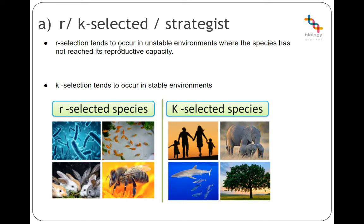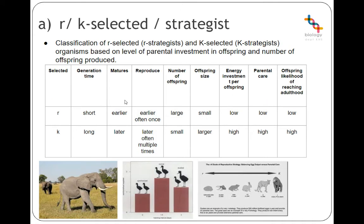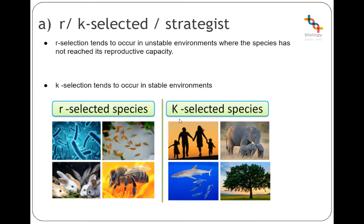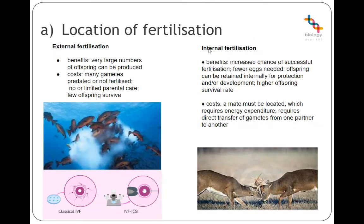R-selection tends to occur in unstable environments — things like bacteria on an agar jelly that hasn't yet reached carrying capacity: they will just divide and divide rapidly with a short generation time. K-selection tends to be in stable environments — elephants and trees take a while to reach maturity, but once they do, they can invest substantially in each offspring.